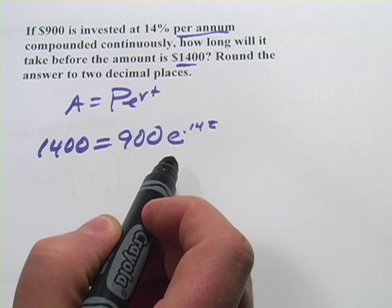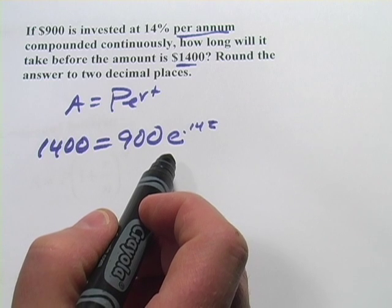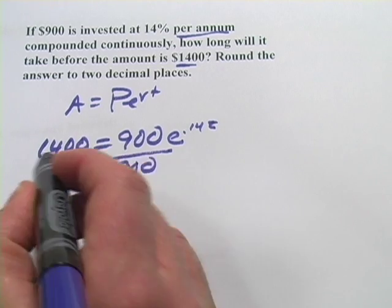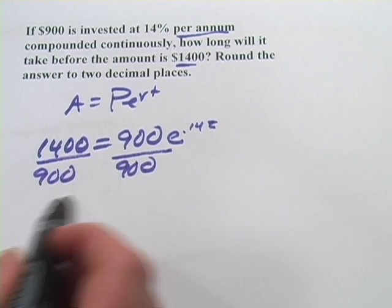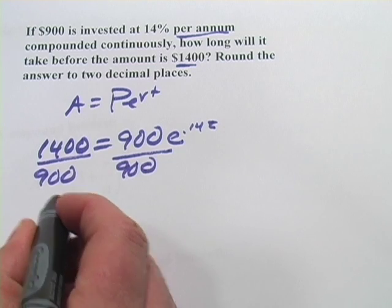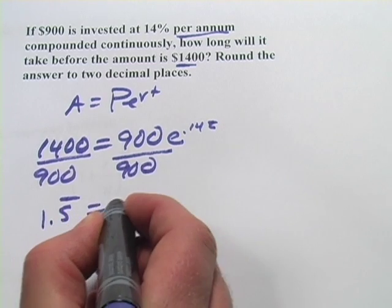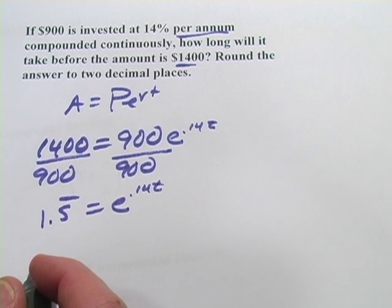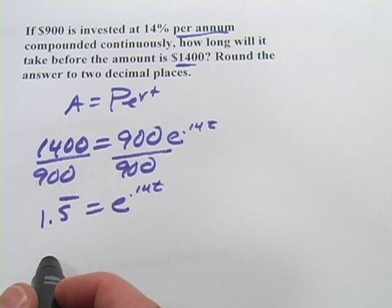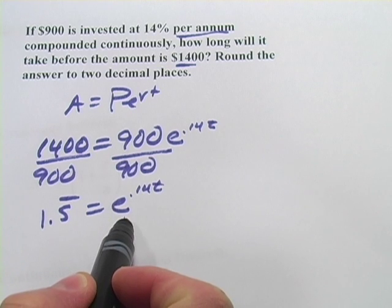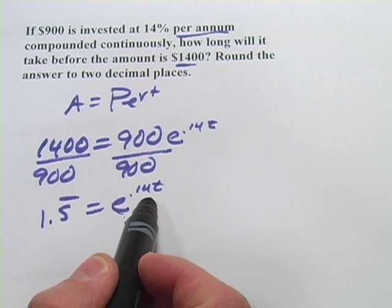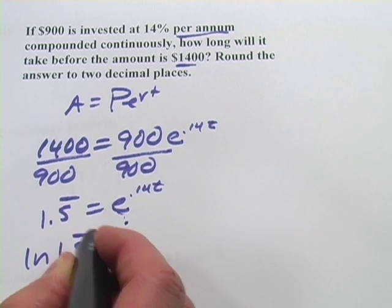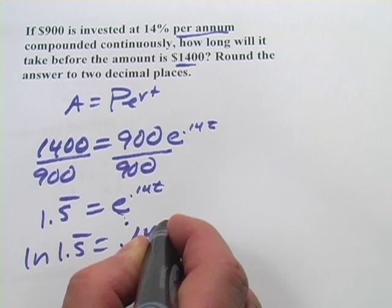So the first thing I'd probably start with is dividing both sides by 900. And that gives us, over here, it's 1.5 repeating. And here we get E to the 0.14T. And then at this point, what I would do is take the natural log of both sides. And remember, what it's going to do over here to E is just cancel it out. So we just get 0.14T. So we have the natural log of 1.5 repeating equals 0.14T.